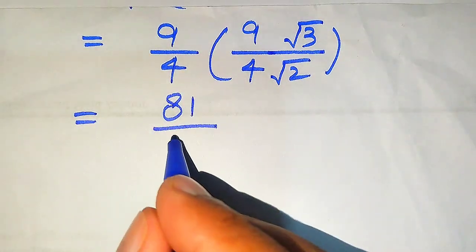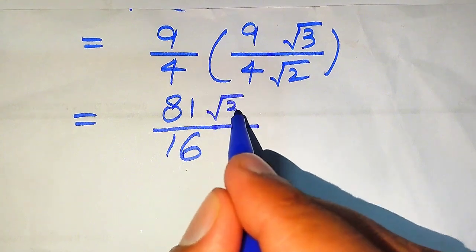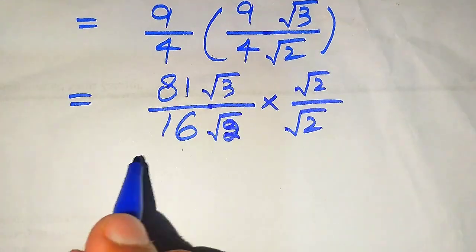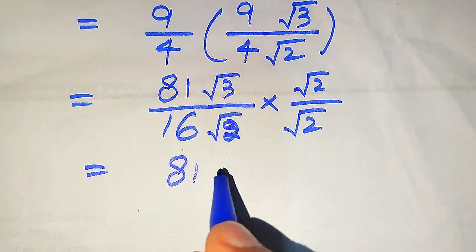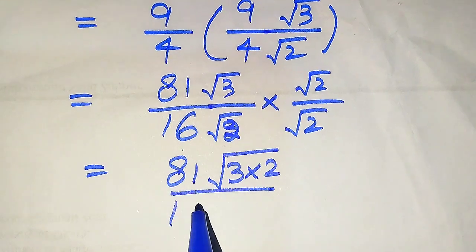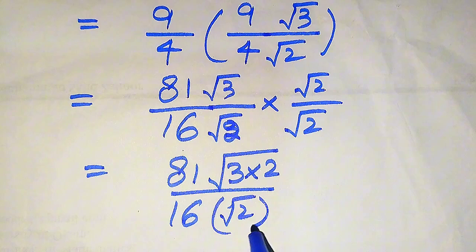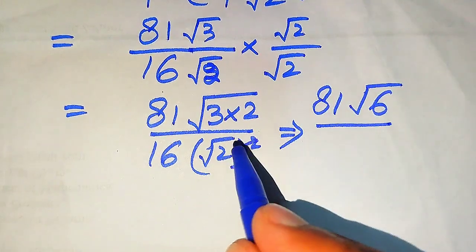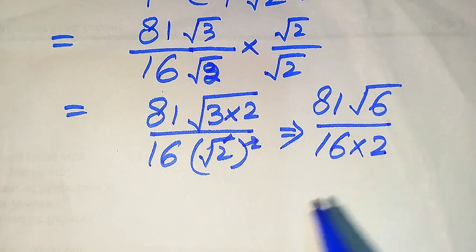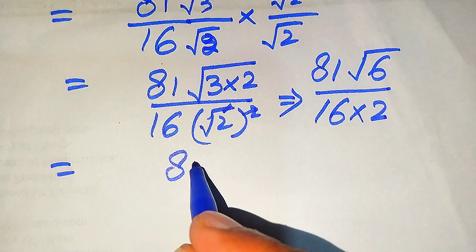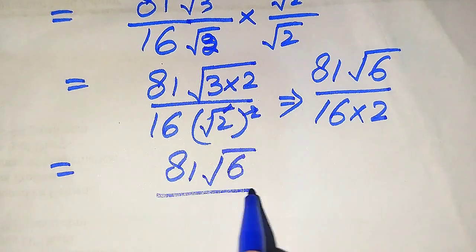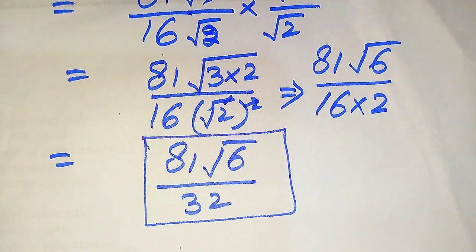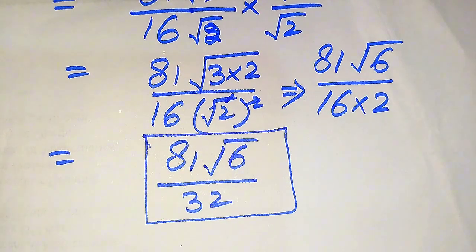Multiplying 9 times 9 gives 81 and 4 times 4 gives 16. We rationalize the √2 in the denominator by multiplying and dividing by √2. We combine the square roots: √3 times √2 gives √6, and √2 times √2 equals 2, so the 2 and the square root cancel. We get 81 times √6 divided by 16 times 2, which is 32. So the final simplified form of the given expression is 81√6 divided by 32. Thank you so much for watching this video — please subscribe to my channel for more exciting videos.